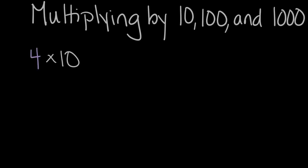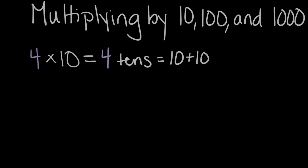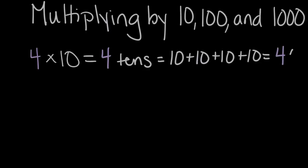Four times 10 is the same as saying four 10s. One way we could represent that is as 10 plus a second 10, plus a third 10, plus a fourth 10, or four 10s. And now let's count that: 10 plus 10 is 20, plus 10 is 30, plus 10 is 40. So our solution is 40, or a four with a zero.